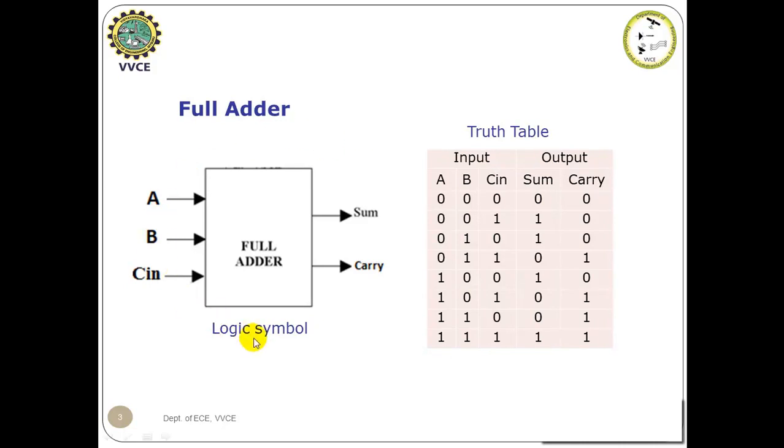This is the logic symbol of full adder. It is having three input bits A, B, Cin and two output bits sum and carry. With three input bits, there are eight combinations of inputs in the truth table and these are the corresponding sum and carry outputs that are tabulated.